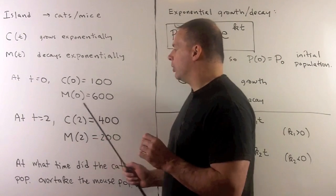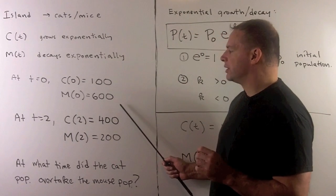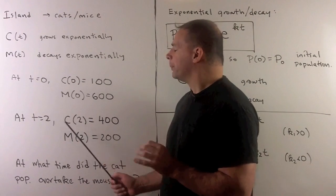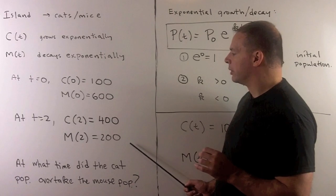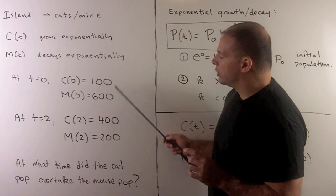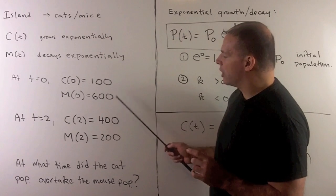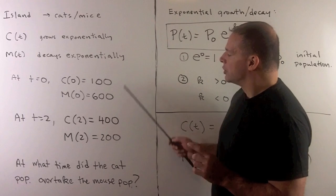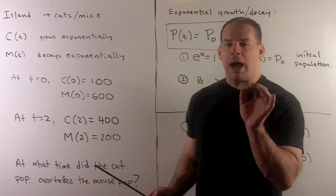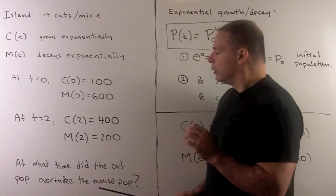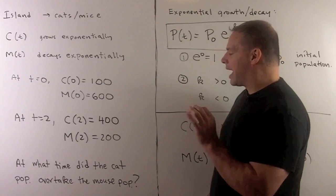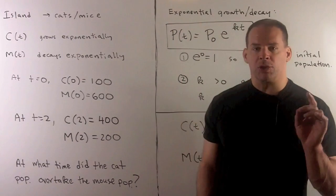At t equals zero, we have 100 cats and 600 mice. Two years later, we have 400 cats and 200 mice. We're going from 100 to 400 cats, 600 to 200 mice. So at some point, the population numbers are going to be equal. We want to know at what time does the cat population overtake the mouse population.